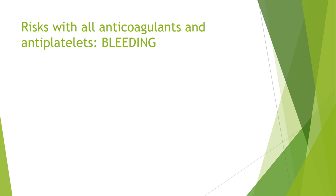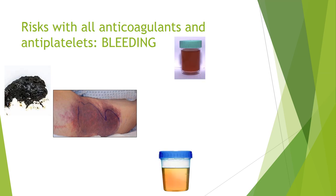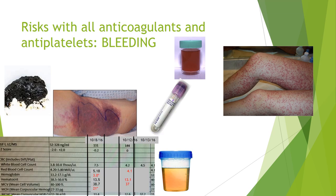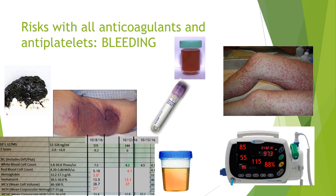Before jumping into specific drugs, keep in mind that regardless of which drug we're giving, this patient is going to be more prone to bleeding. Warfarin, Plavix, aspirin, heparin — they all have something in common. As the nurse, we are watching for signs of bleeding: black tarry stool indicating GI bleed, retroperitoneal bleed, hematuria, petechiae, and changes in hemoglobin and hematocrit. If someone is hypovolemic due to hemorrhage, their blood pressure will drop and heart rate will likely increase as reflex tachycardia in response to hypovolemia.